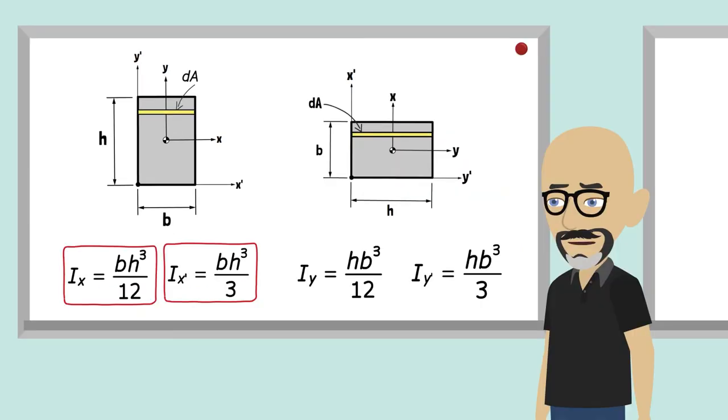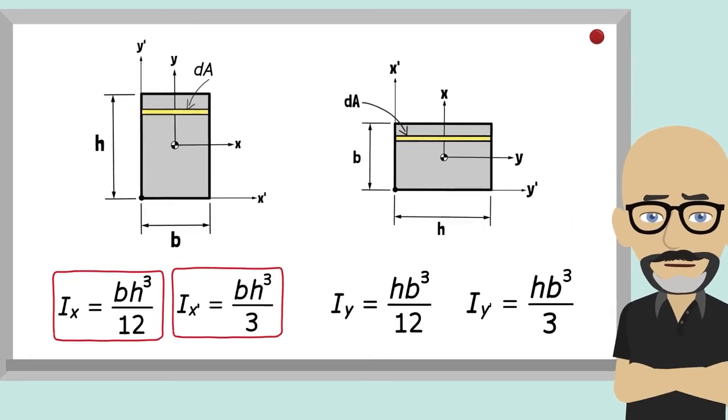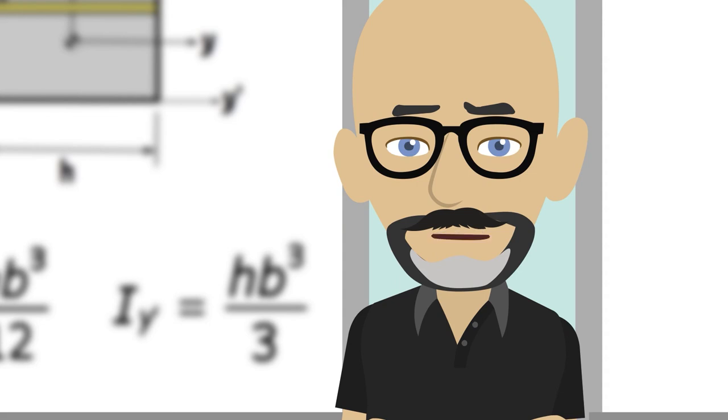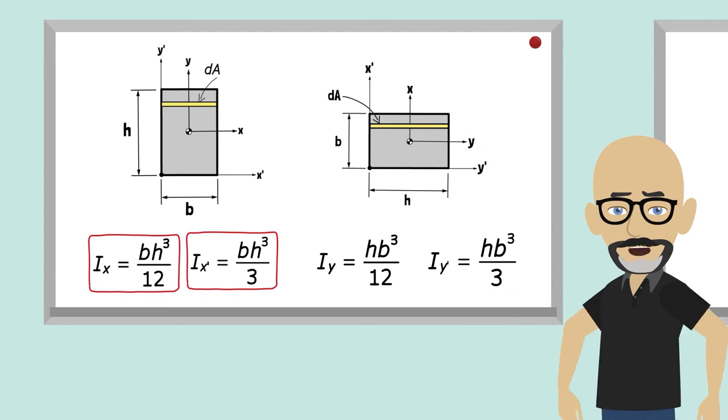With that, I have then solved for everything the question asked for. We solved for Ix and Ix prime directly using integration, although I could have saved some time using the parallel axis theorem, and we were able to infer what Iy and Iy prime are due to the similar distribution of area about the x and y axes, just with the dimensions swapped.